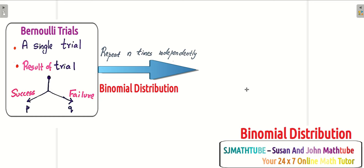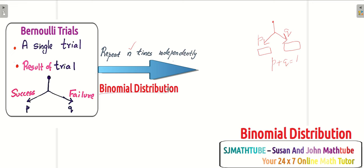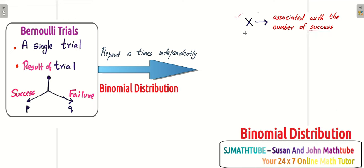So I hope the definition is clear. We have our Bernoulli trial — an experiment which ends up with two complementing outputs. We label one as success with probability P, and the other as failure with probability Q, and P plus Q equals 1. Now if you repeat this experiment again and again, theoretically n times independently, that gives rise to our binomial distribution. Here, we assume capital X to be the discrete random variable associated with the number of successes.